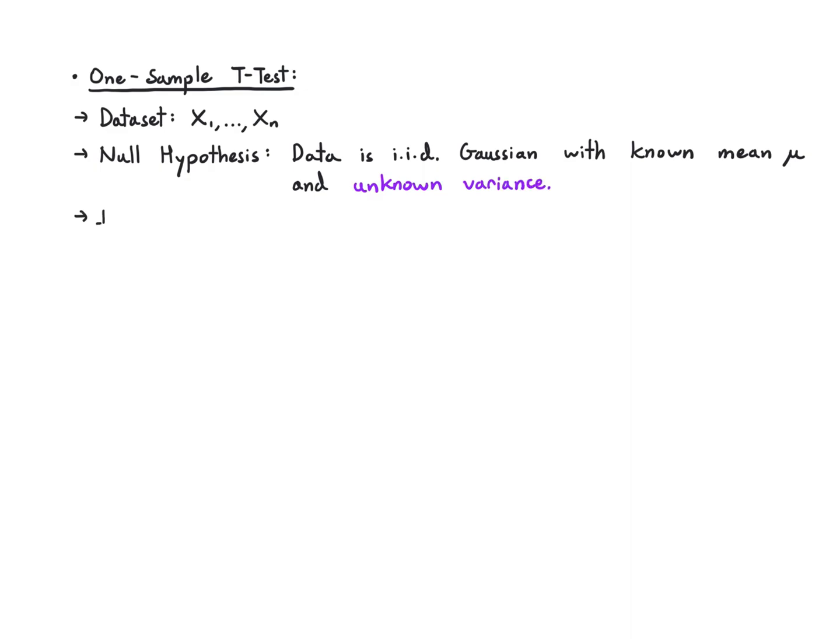What about a one-sample t-test? Again, I'm going to have a very similar scenario. There's going to be one change. I have a dataset with n points. I have data that I think is IID Gaussian. I know its mean. I know under the null, the mean is mu. But I don't know the variance. That's the change from z to t.